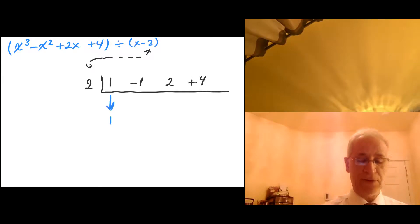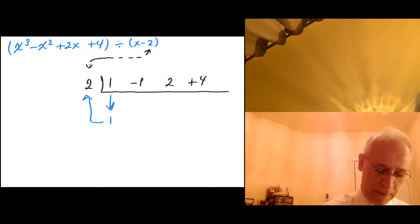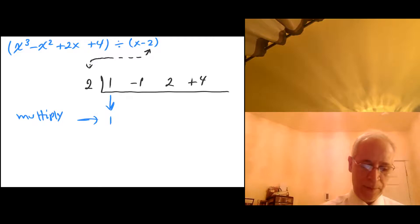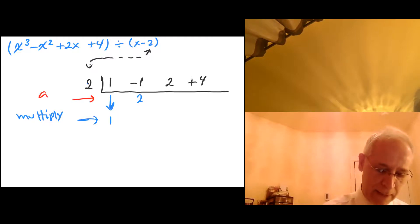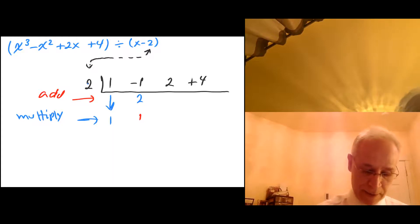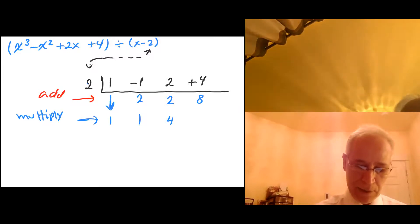First, bring the 1 down — that's the first step, bring the first number down. Now, 1 times 2 is 2. I'm going to multiply this row: 1 times 2 is 2, and this is the row that I'm going to be adding. This 2 combined with negative 1 gives me 1. Then 1 times 2 gives me 2, added together gives me 4. 4 times 2 is 8, add them, it gives you 12.